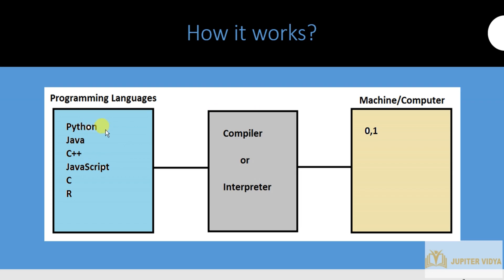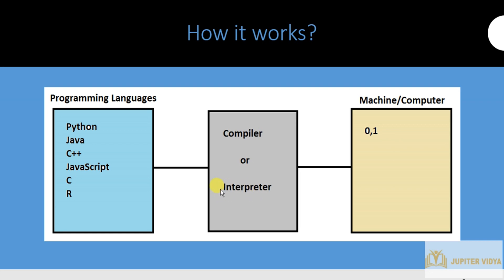If we use Python, it cannot directly communicate with the machine — we have to convert it to machine language first. This can be done with the help of a compiler or interpreter. Python uses an interpreter to convert our code to machine language. Some languages use a compiler — for example, C++ uses a compiler to convert code to machine language, whereas Python uses an interpreter.